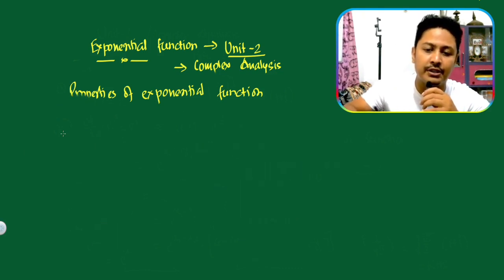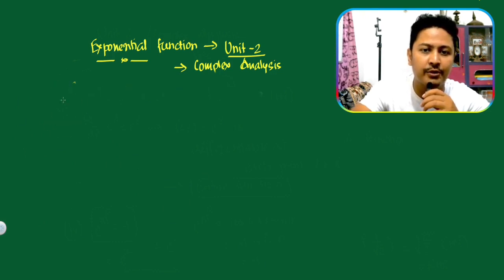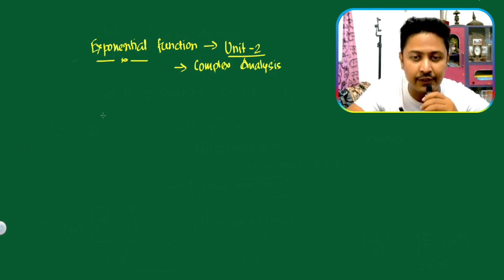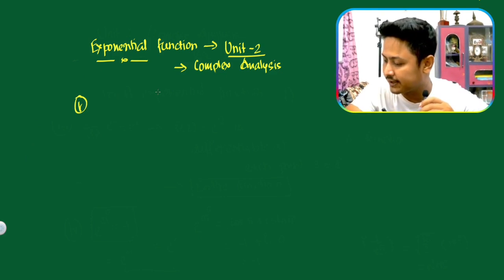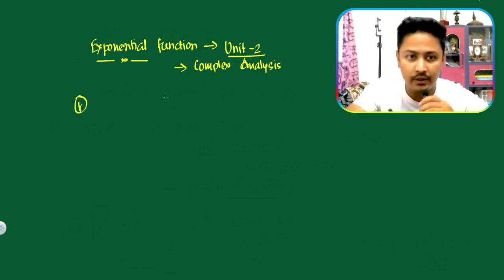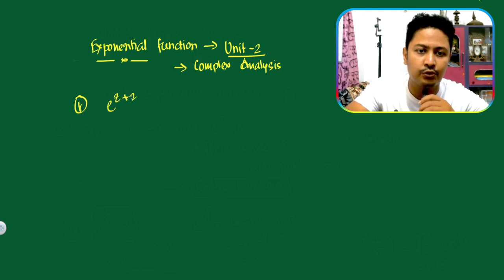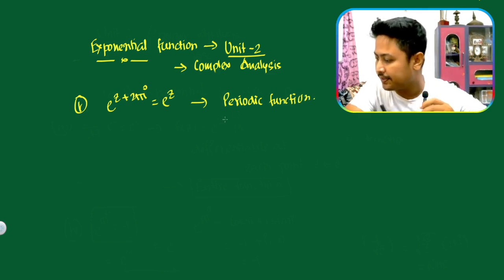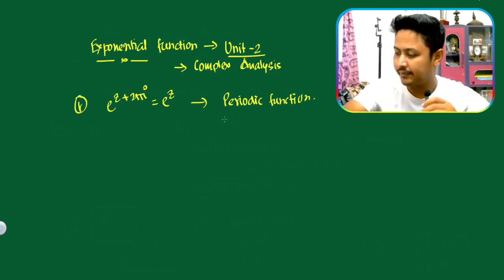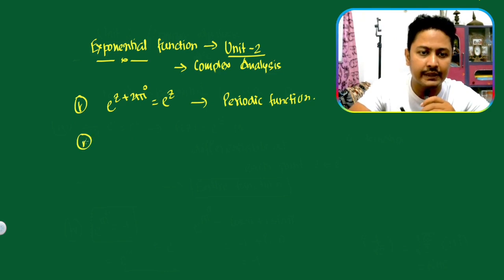Next property: the complex exponential function is a periodic function. Property 5: e to the power z plus 2 pi iota equals e to the power z. So e^z is a periodic function with period 2πi. Also, e to the power 2 pi i equals 1.